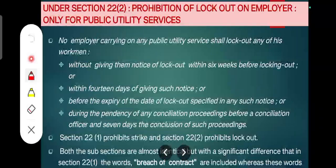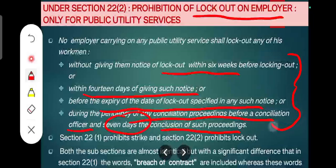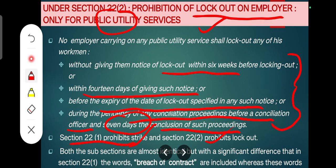The same provisions apply to the employer regarding lockout under Section 22(2): no lockout without six weeks' notice, not within 14 days of notice, not before the expiry of the specified date, not while conciliation proceedings are pending, and not within seven days of their conclusion. The breach of contract clause applies only to Section 22(1) — i.e., workers — not to Section 22(2) for employers, since the contract is signed by workers.